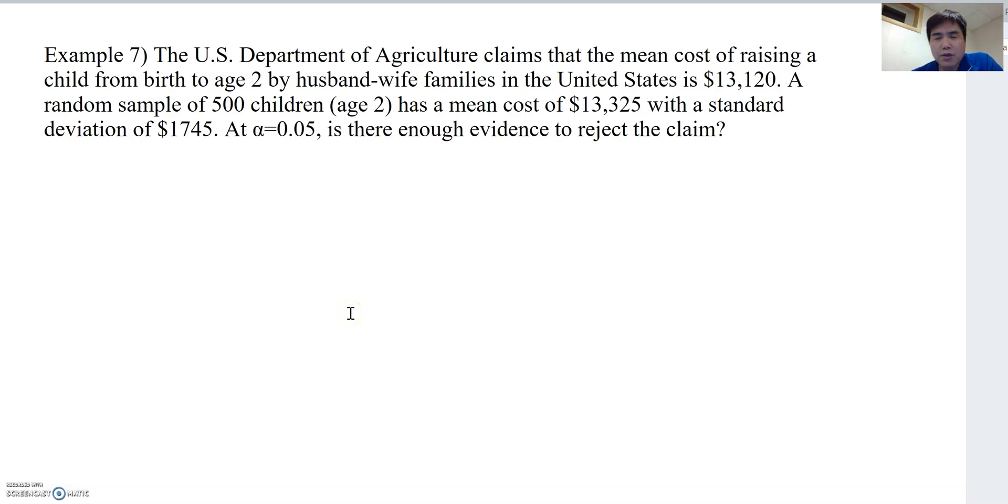Let's discuss this question. The U.S. Department of Agriculture claims that the mean cost of raising a child from birth to age 2 by husband-wife family in the U.S. is $13,120. A random sample of 500 children has a mean cost of $13,325 with a standard deviation of $1,745. At alpha equals 0.05, is there enough evidence to reject the claim?